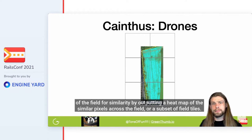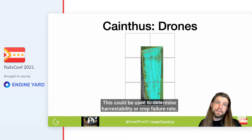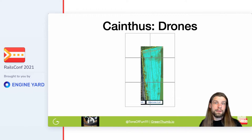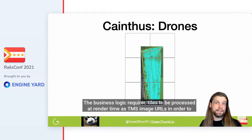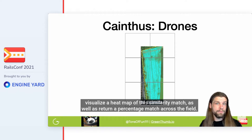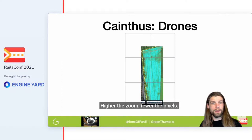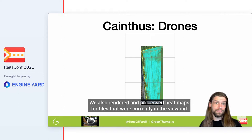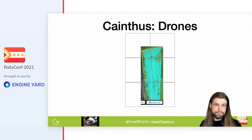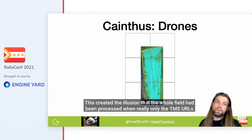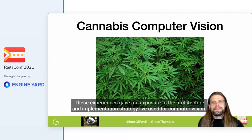By outputting a heat map of similar pixels across the field, or a subset of field tiles, this could be used to determine harvestability or crop failure rate. The business logic required tiles to be processed at render time as TMS image URLs to visualize a heat map of the similarity match and return a percentage match across the field. We simply did this at the highest zoom level to reduce response time — higher zoom means fewer pixels. We also rendered and processed heat maps only for tiles currently in the viewport, creating the illusion the whole field had been processed when really only the TMS URLs requested by Leaflet were processed on demand. These experiences gave me exposure to the architecture and implementation strategy I've used for computer vision.